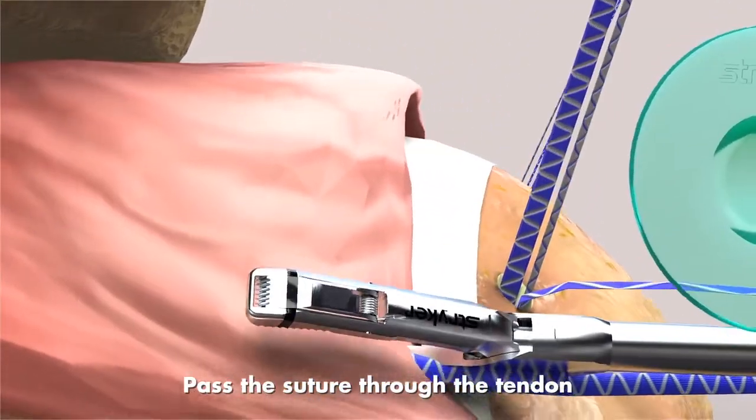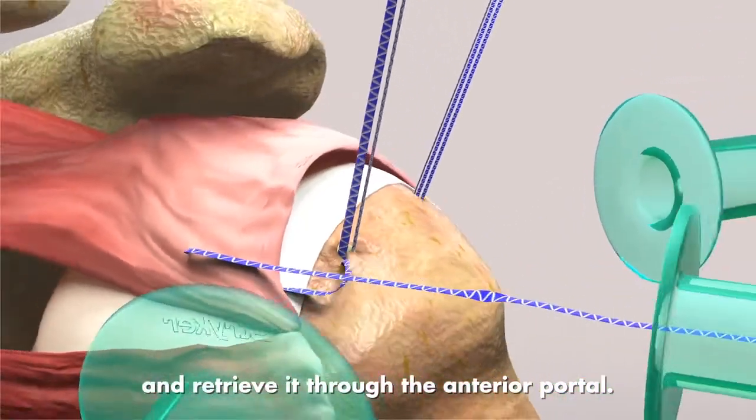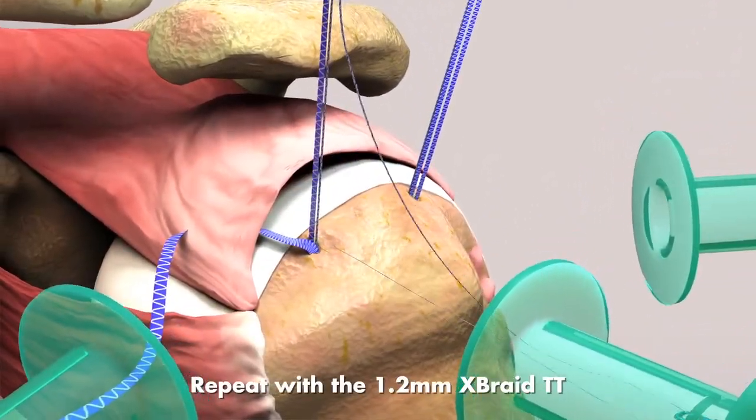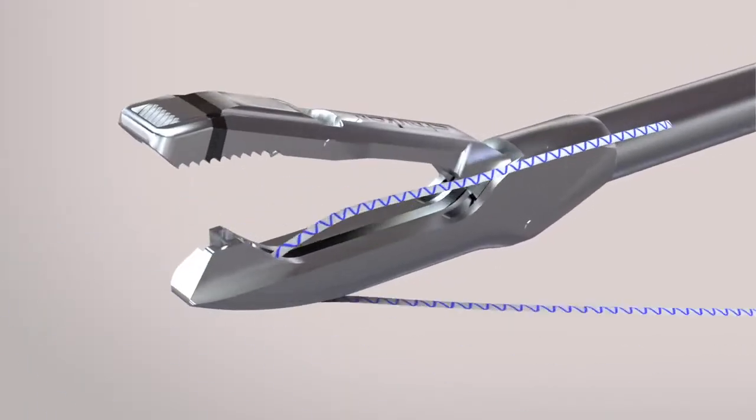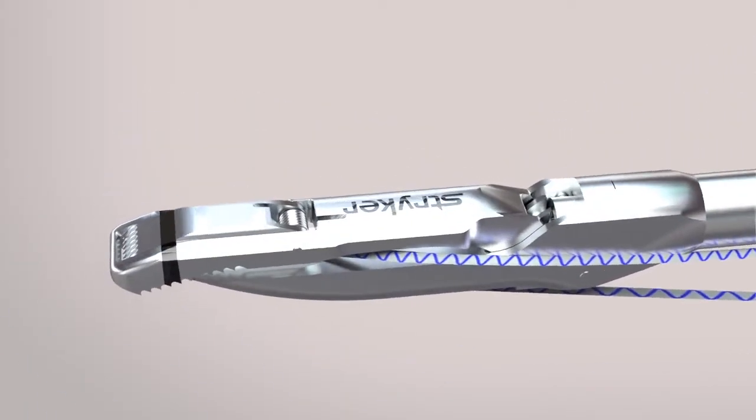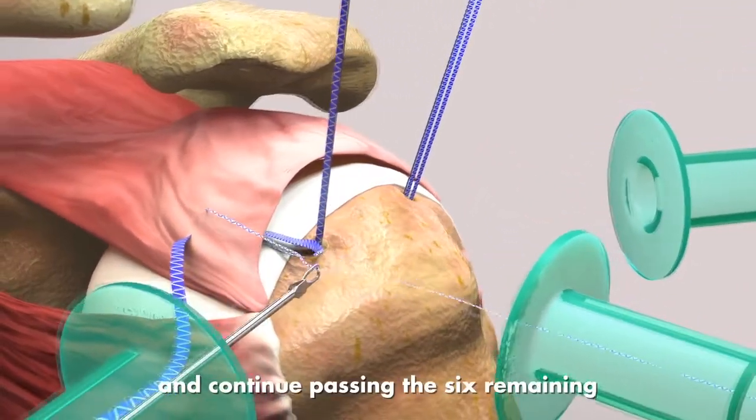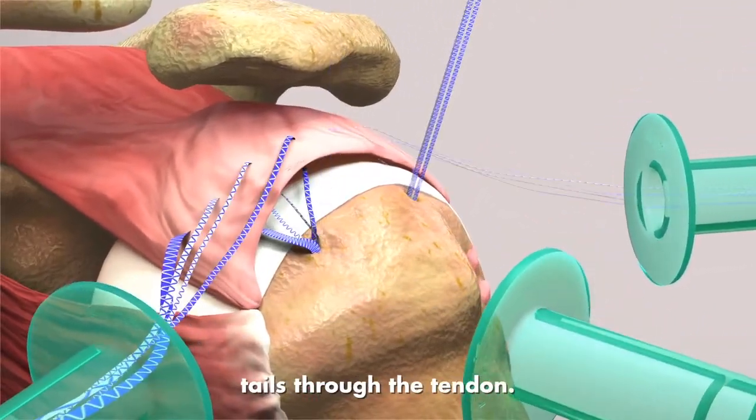Pass the suture through the tendon and retrieve it through the anterior portal. Repeat with the 1.2mm X-Braid TT and continue passing the six remaining tails through the tendon.